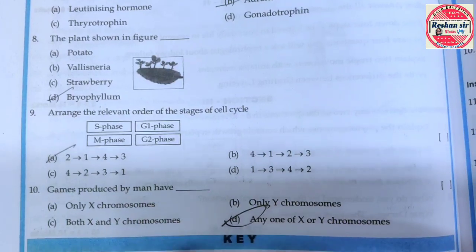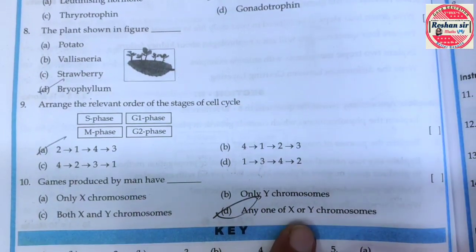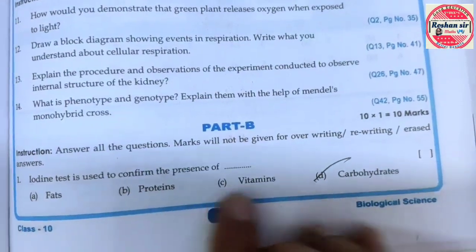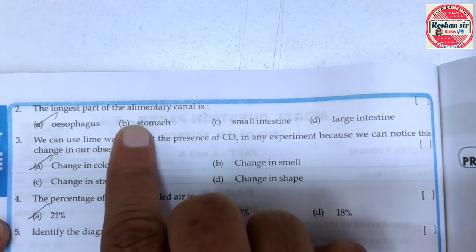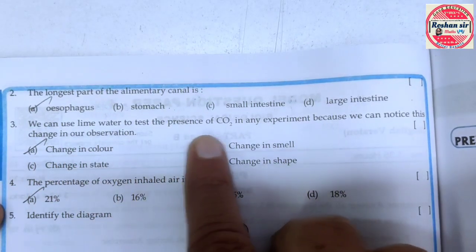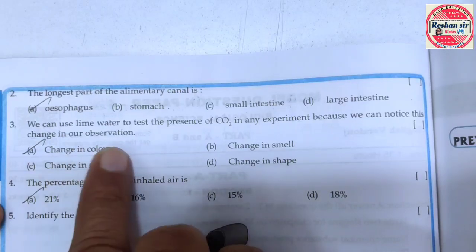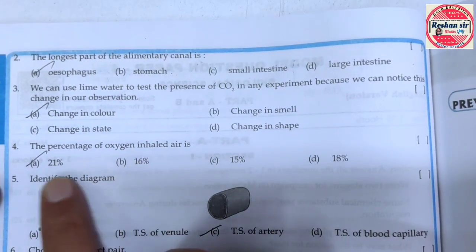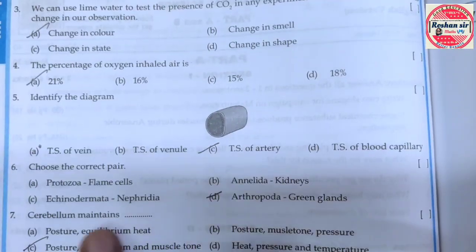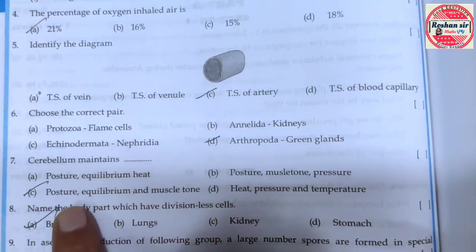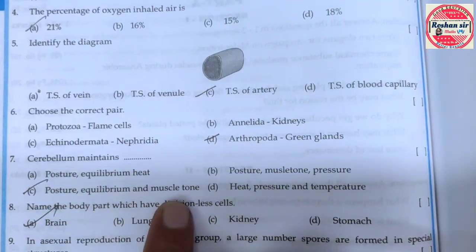Gametes produced by man have either X or Y chromosome. Iodine test is used to confirm the presence of carbohydrate. The longest part of the alimentary canal — small intestine. We can use lime water in the test for the presence of CO2 — change in color to milky white. The percentage of oxygen inhaled is 21%. Cerebellum maintains posture, equilibrium and muscle tone.